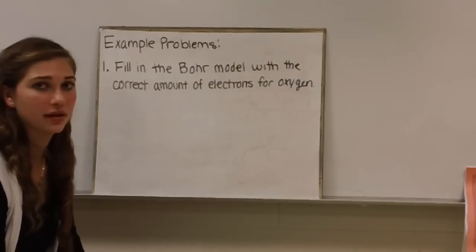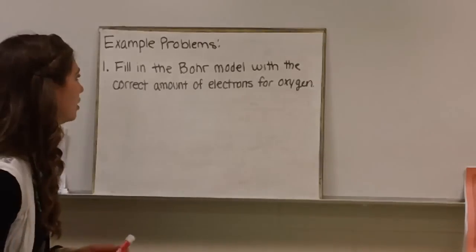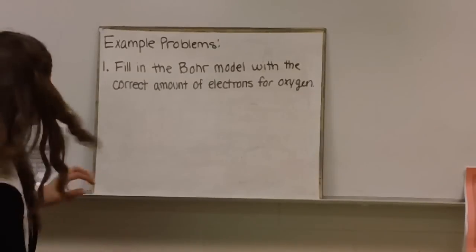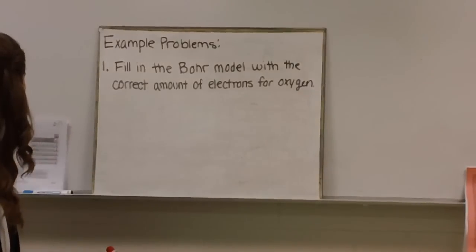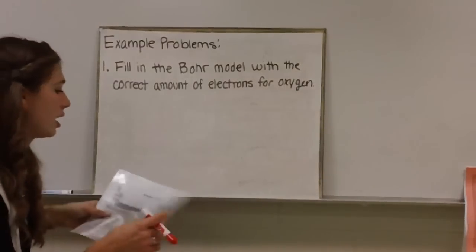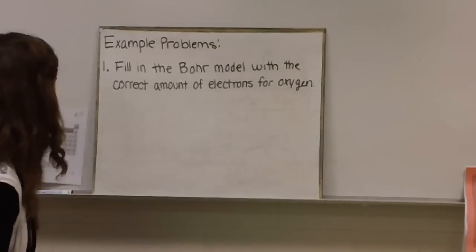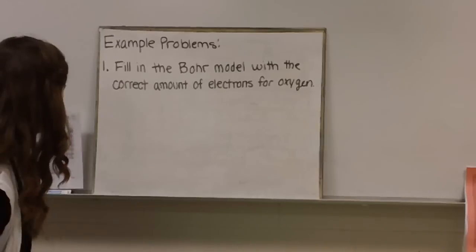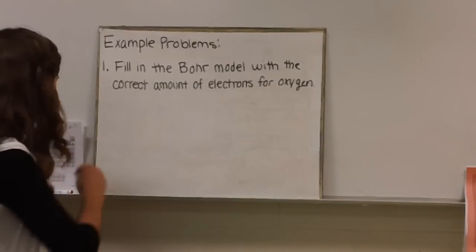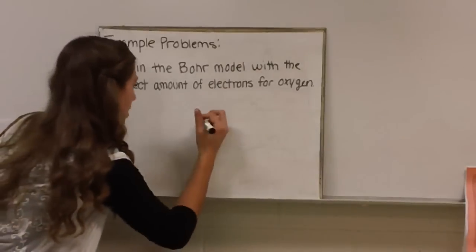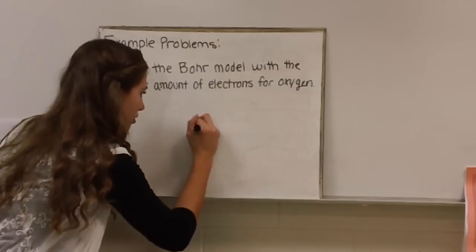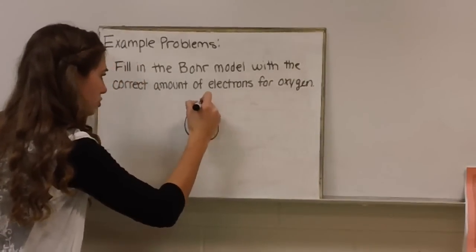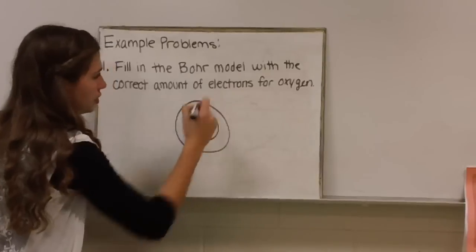Let's try a sample problem together, and then you can do one on your own. Fill in the Bohr model with the correct amount of electrons for oxygen. If you look at oxygen on our periodic table, we can see that it has an atomic number of eight. So that tells us that there are eight electrons since it's a neutral atom. We're going to draw our Bohr model. Start with our nucleus, and let's draw some orbits, or energy levels.